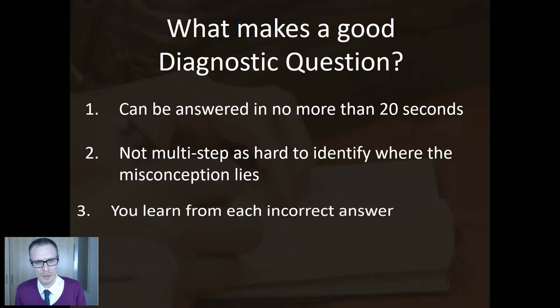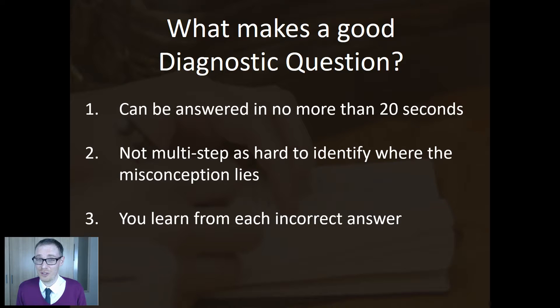What's golden rule number three? This is crucial. You should be able to learn something from every incorrect answer. There shouldn't be any redundant answers in there. So if a child answers B and B's wrong, just from their answer, you should be able to tell something about the child's way of thinking.